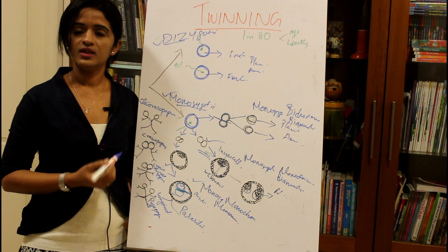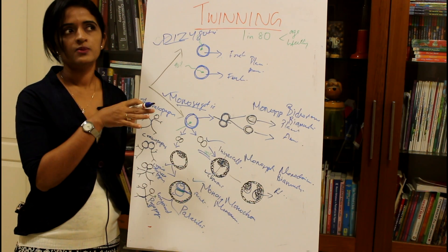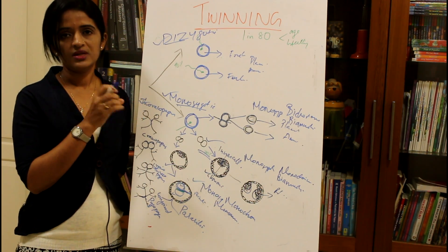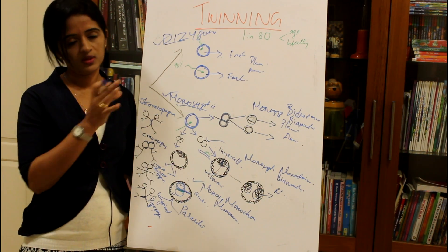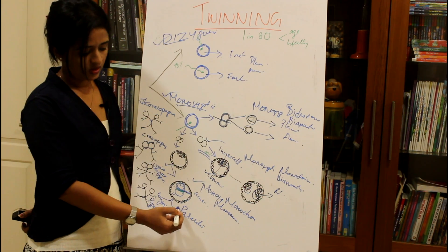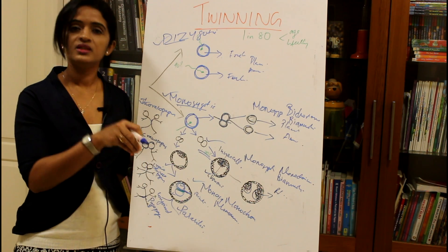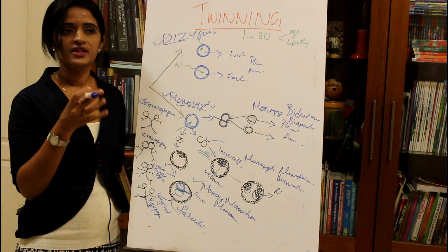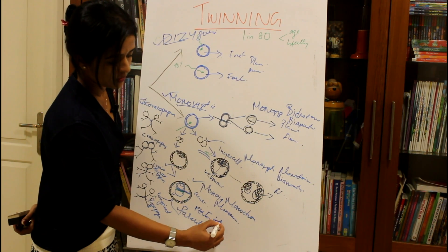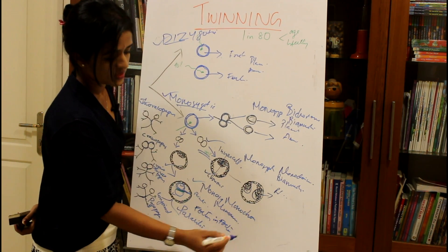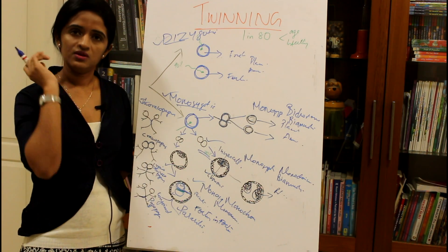In parasitic twins, one twin is rudimentary and depends on the other major twin because its blood supply is diminished, causing it to remain small. Sometimes this parasitic twin is found within the major twin — this condition is called fetus in feto, meaning the parasitic twin is seen inside the other twin.